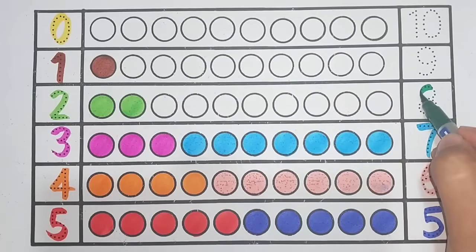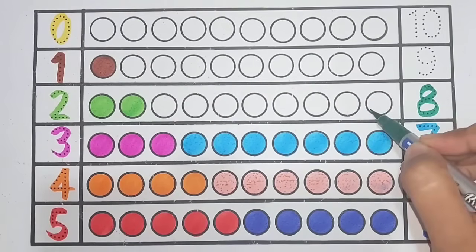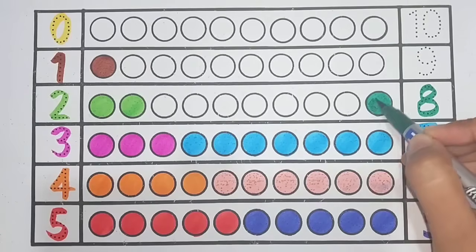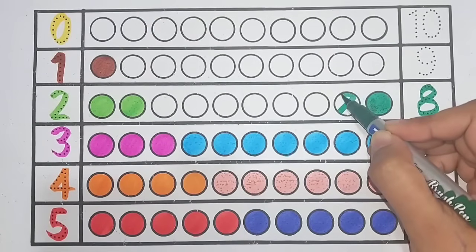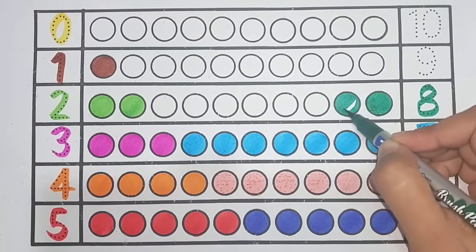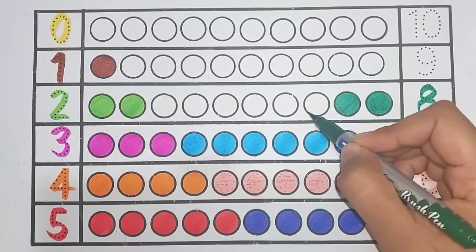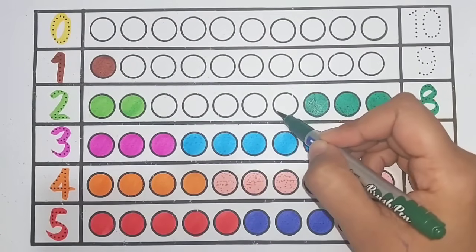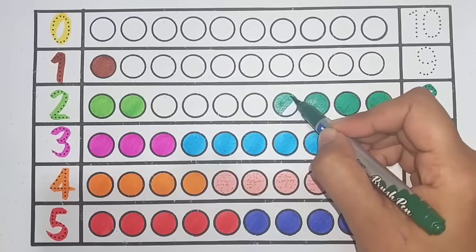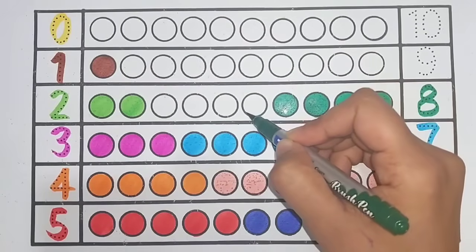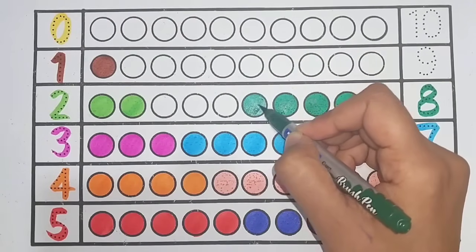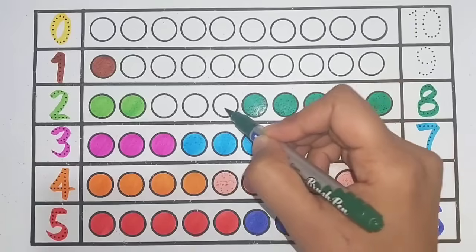Green color: 8. 1, 2, 3, 4, 5, 6, 7, 8. 8 circles.